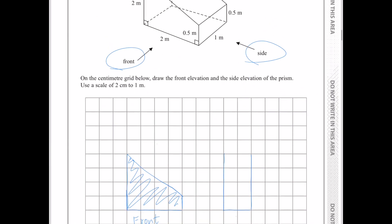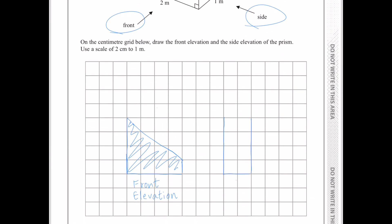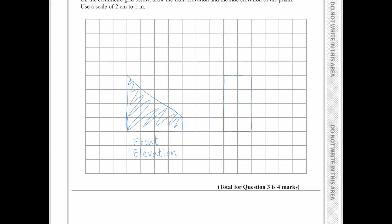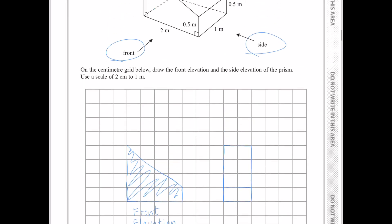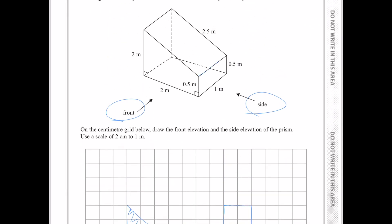Then, the top side is 1 metre on the diagram. So, on the grid, it would be 2 centimetres. Then, I need to draw a line 1 centimetre above the 2 centimetre base of the rectangle. Right there. Because of this edge in the diagram.